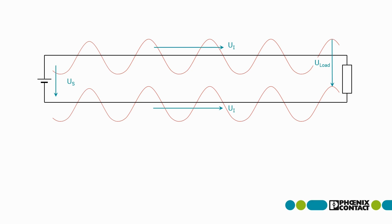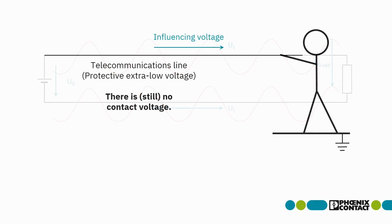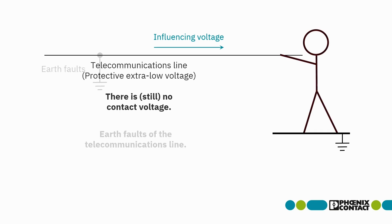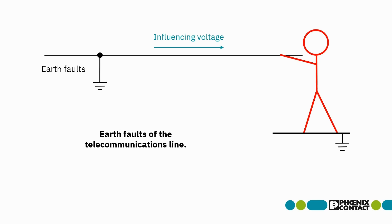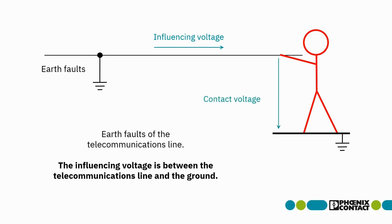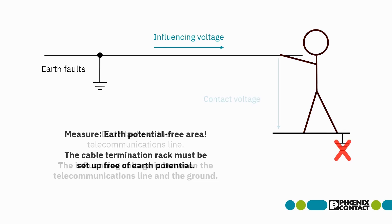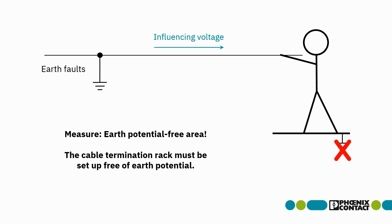This raises the question of the conditions under which there are effects. Starting with the effects on people: touching an affected line alone is not dangerous. A danger to humans only arises with an earth fault — then the interference voltage is present as touch voltage. To protect against this, the area in which cables can be touched must be earth potential free.